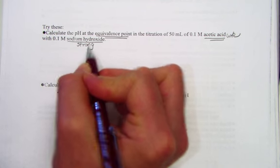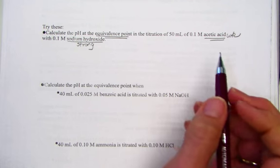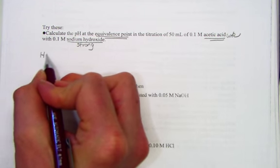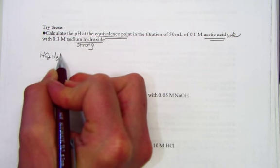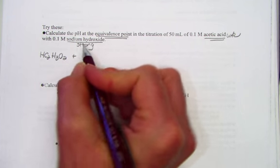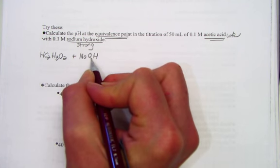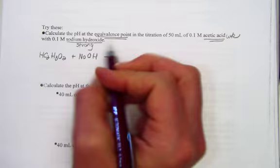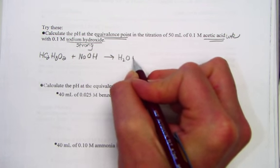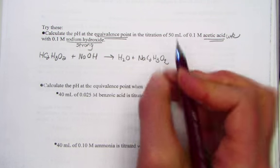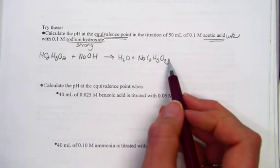Weak acid with strong base at the equivalence point. Let's take a peek at what that means. If we have acetic acid, HC2H3O2, plus sodium hydroxide, NaOH - weak acid with strong base - just think of a double displacement where water is produced and the salt of sodium acetate, NaC2H3O2.